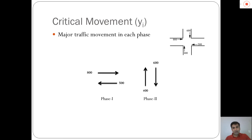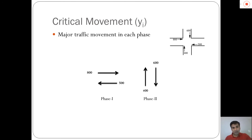The next definition is the critical movement, which is the greatest or major traffic movement that takes place in each phase. In the two-phase plan, we see movement of 800 and 500 vehicles in phase one, and movement of 600 and 400 vehicles in phase two. The critical movement is the greater traffic movement in each phase — which is 800 vehicles per hour in phase one and 600 vehicles per hour in phase two. These two movements are called the critical movements for each of the two phases.